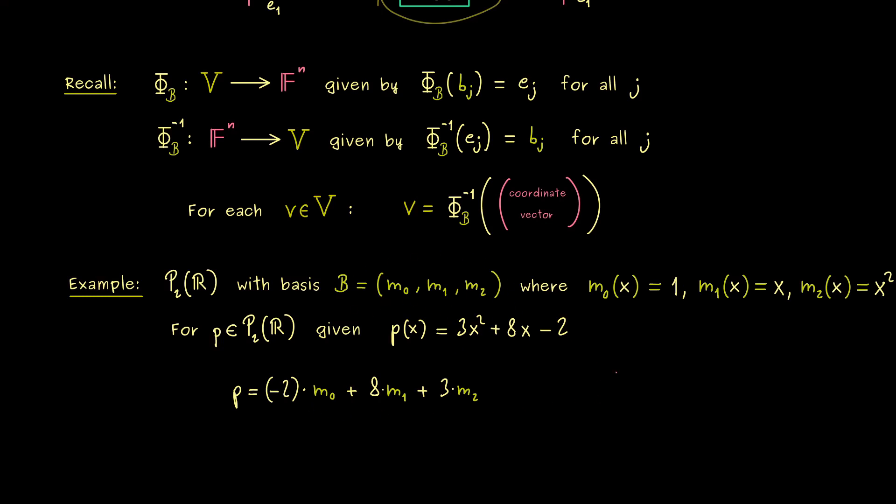And here please note we have to respect the order in the basis. And then you should see we find our coordinate vector as minus 2, 8, 3. And if we put this into our φ inverse we get our abstract p. Hence the basis isomorphism here is the translation you should never forget. Only with that in mind this vector in ℝ³ has the meaning of a polynomial.